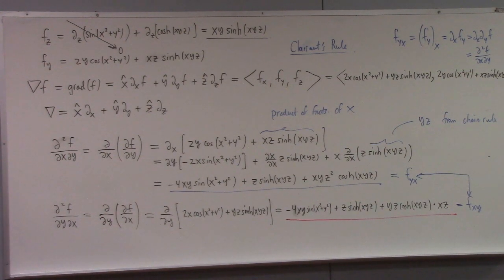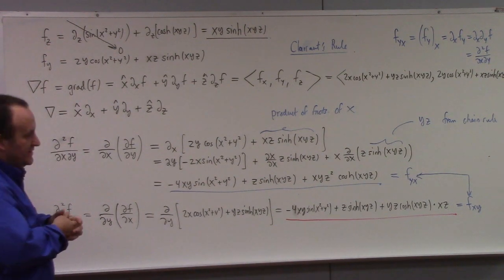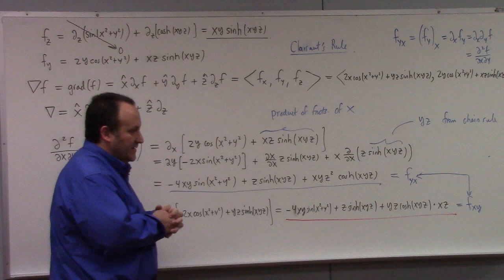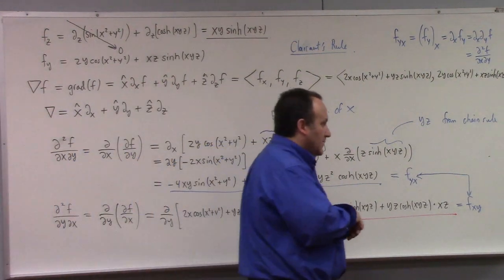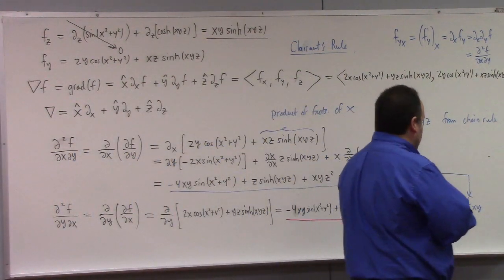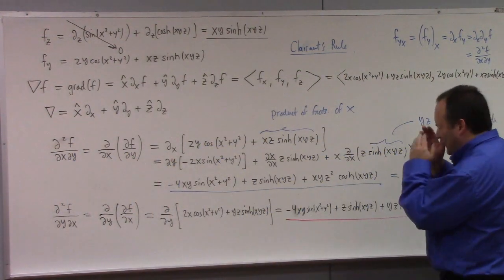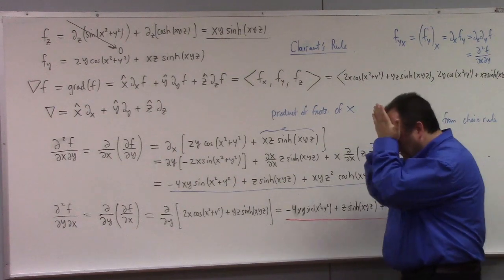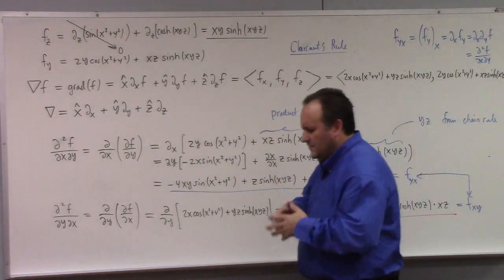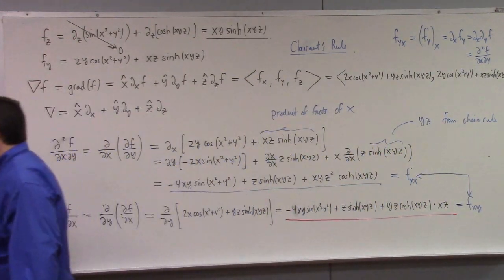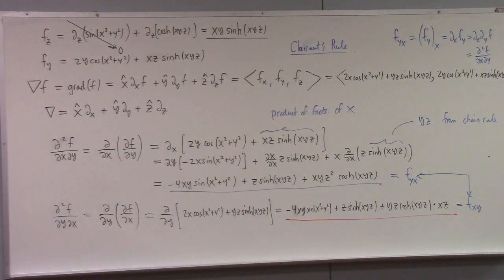When do those counterexamples occur? There has to be some kind of discontinuity in the second partial derivatives. If the second partial derivatives are continuously differentiable, that's when Clairaut's theorem works.